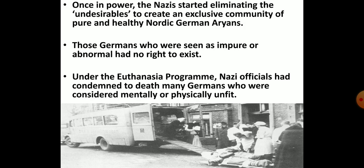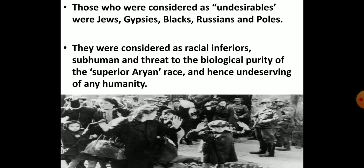Even those Germans who were seen as impure or abnormal did not have the right to exist in Nazi Germany. In the undesirable community were included not only Jews, but also gypsies and blacks. They were considered a threat to the biological purity of the superior Aryan race and therefore widely persecuted. Even Russians and Poles were considered subhumans. When Germany occupied Poland and parts of Russia, civilians captured from there were treated as slaves. Many of them died due to hard work and hunger.